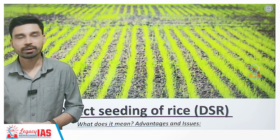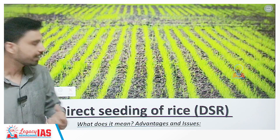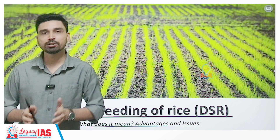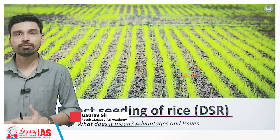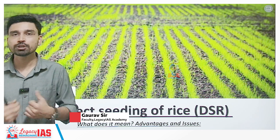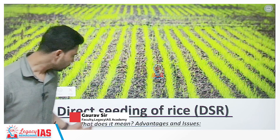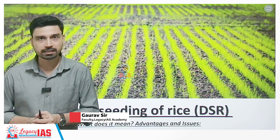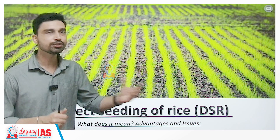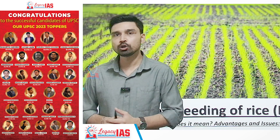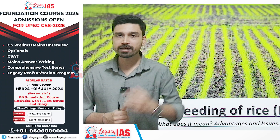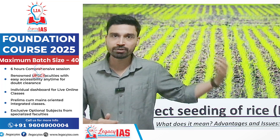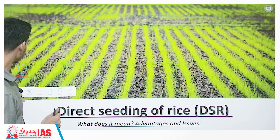Hello students, welcome to Legacy as Academy. In today's video we are going to discuss about direct seeding of rice, a novel method of rice cultivation being promoted by the Punjab government and other regions of India. We will discuss what direct seeding of rice means, how it differs from the traditional method, and why despite its many advantages it has not been able to pick up pace in north and northwestern India, especially Punjab, and what challenges farmers face while shifting from the traditional method.